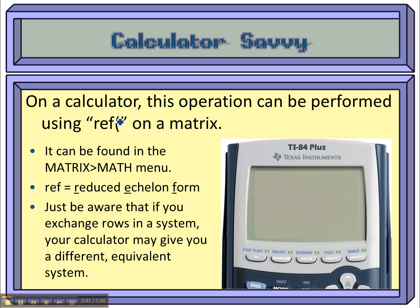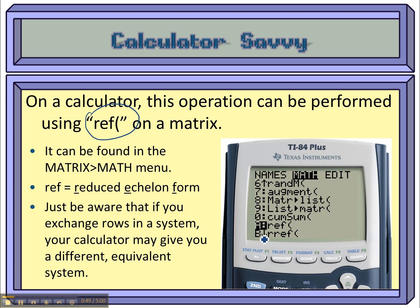So in order to get to this reduced echelon form, which is what REF means on the calculator, it's under the matrix menu, and then you want to scroll over to math and choose A for the REF. And then it would put it into reduced echelon form. But really, you wouldn't want to do that. You'd want to go down here to B and put it in row reduced echelon form.